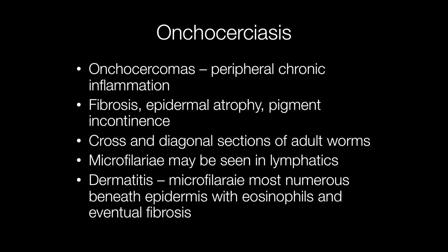Histological features of Onchocerciasis involving the skin include peripheral chronic inflammation around Onchocercomas, fibrosis, epidermal atrophy, and pigment incontinence. Cross and diagonal sections of adult worms may be seen, and within lymphatics microfilariae may be identified. Where there is dermatitis, the microfilariae are most numerous beneath the epidermis, and there will also be an infiltrate of eosinophils and eventual fibrosis.